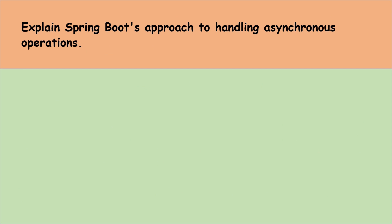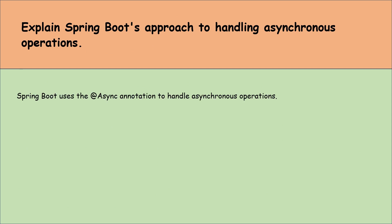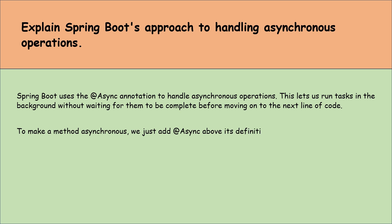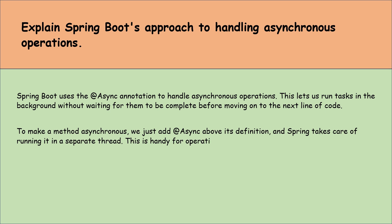Let's move to the next question: explain Spring Boot's approach to handling asynchronous operations. Spring Boot uses the @Async annotation to handle asynchronous operations. This lets us run tasks in the background without waiting for them to complete before moving on to the next line of code. To make a method asynchronous, we just add the @Async annotation above its definition, and Spring takes care of running it in a separate thread.